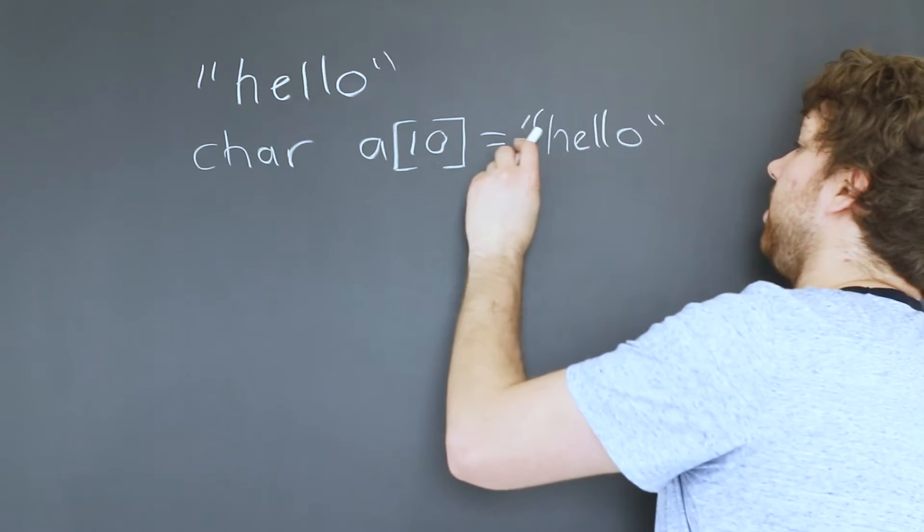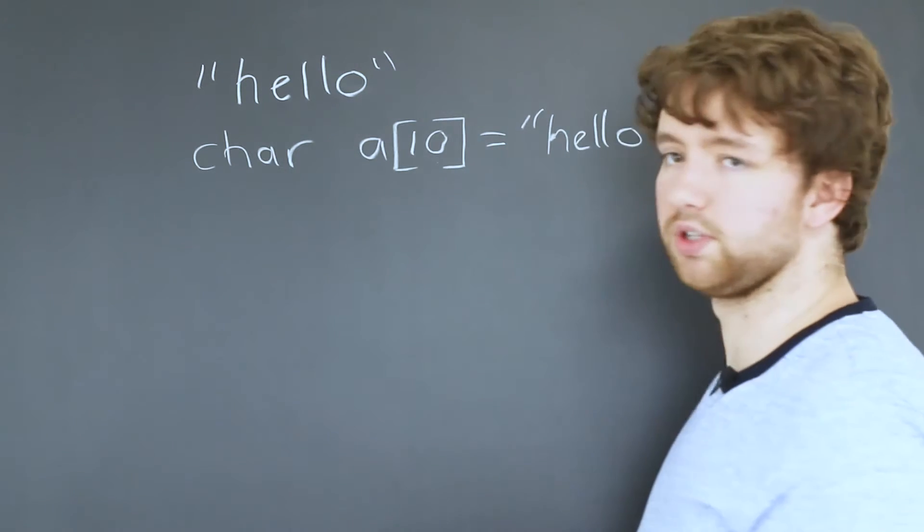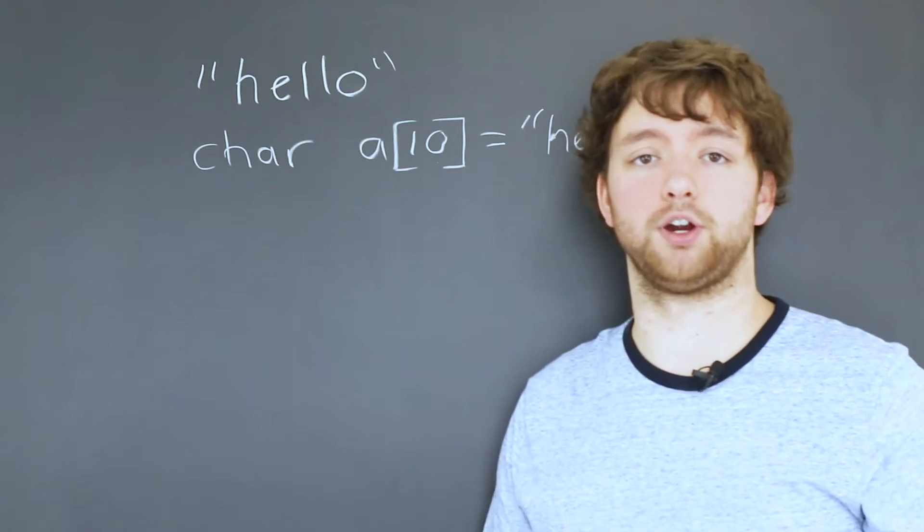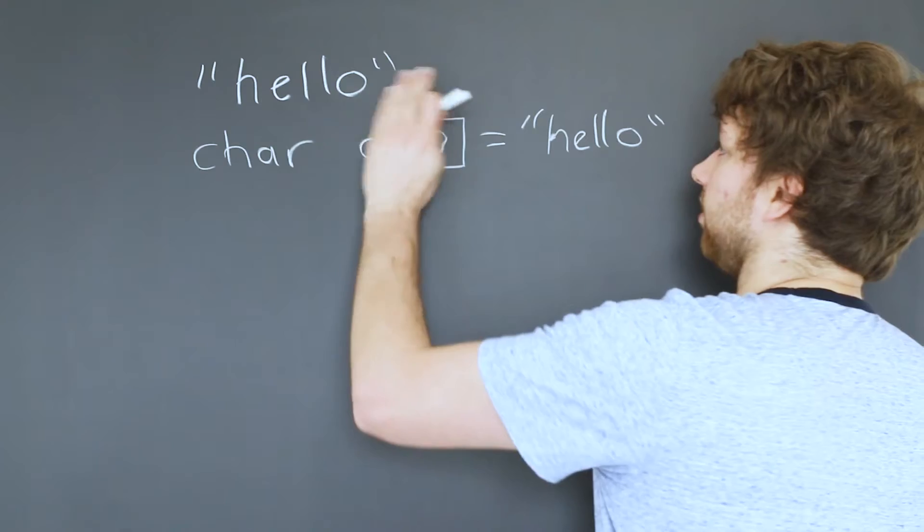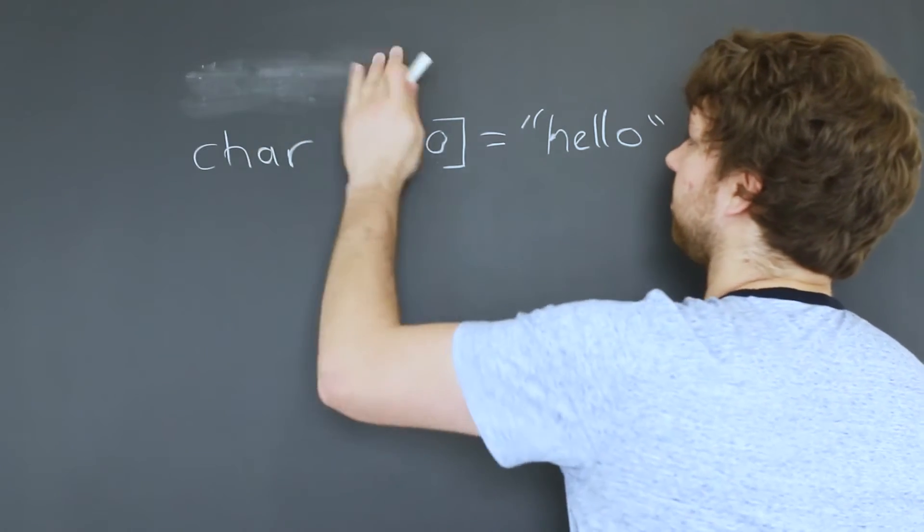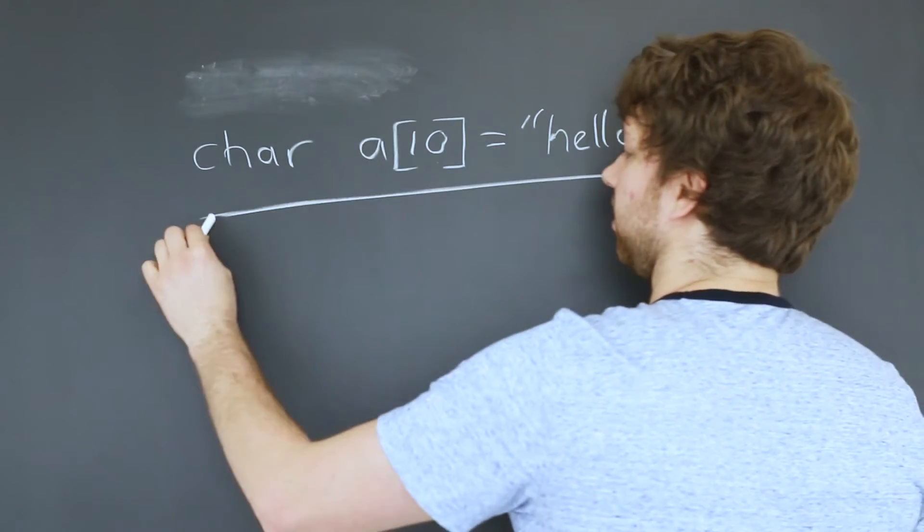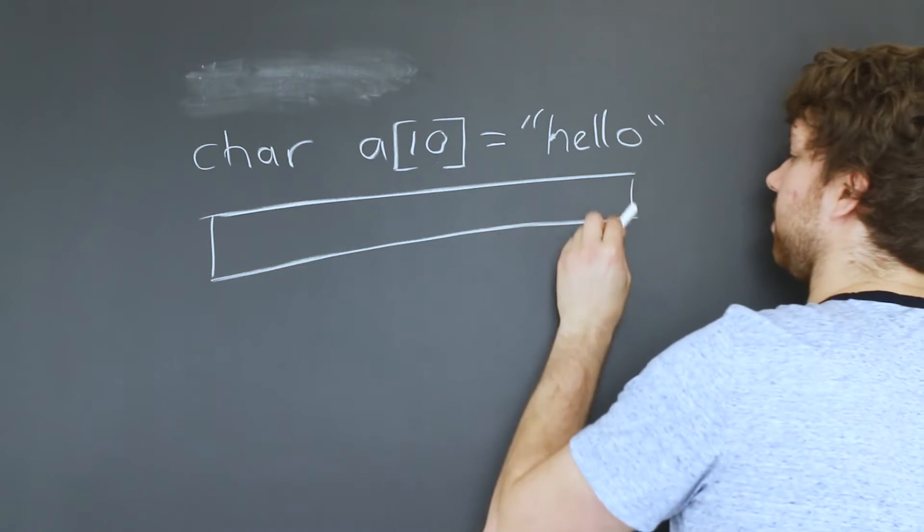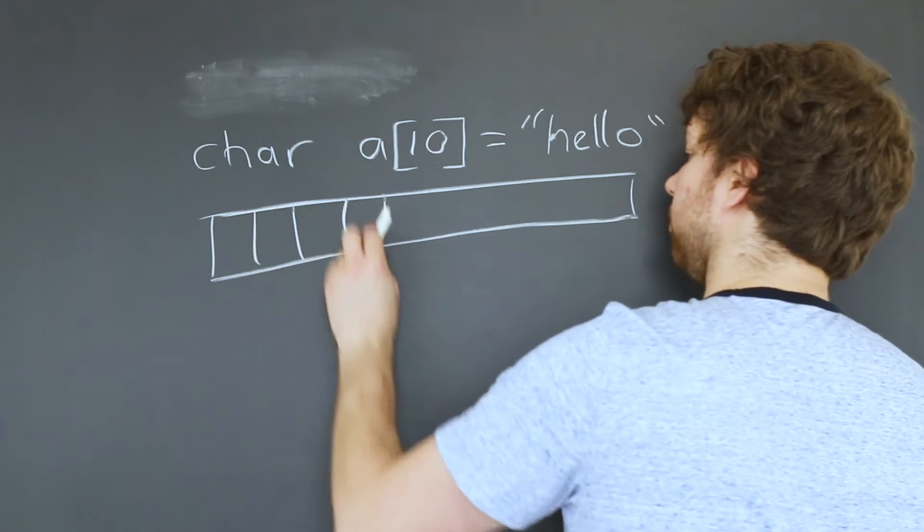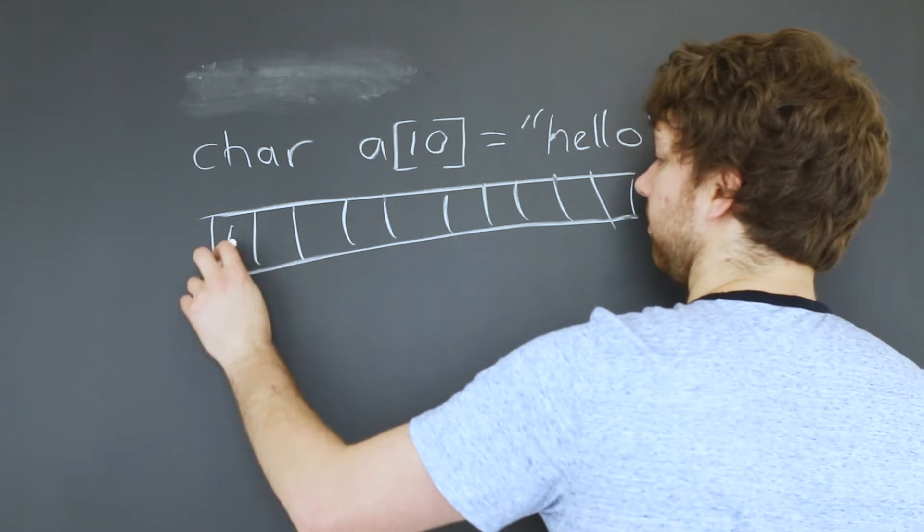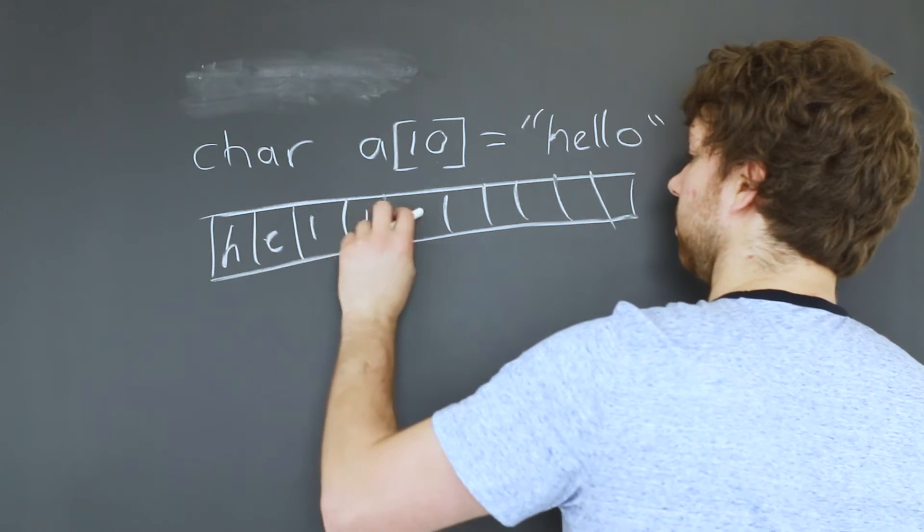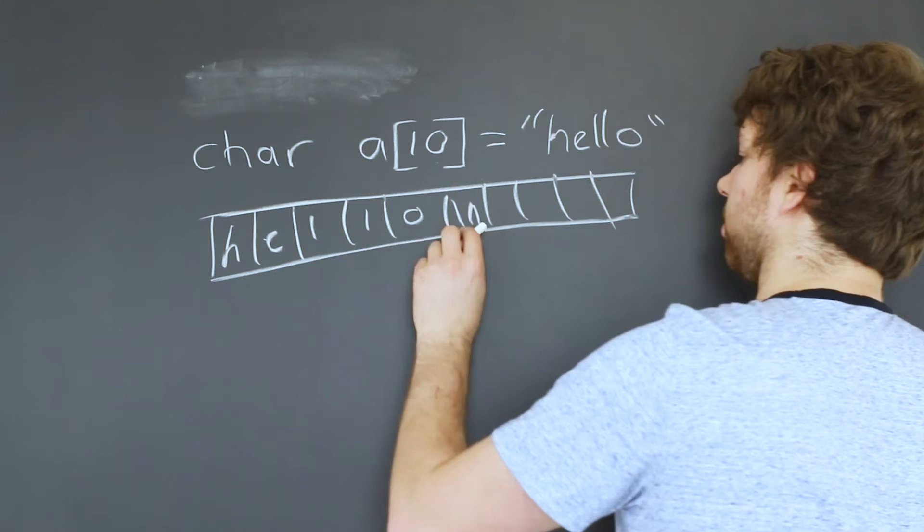And then you can assign it that value. So this is basically the easiest way to assign a string to a variable in C programming. So what this is going to do, and let's ignore this up here for now. We don't need that no more. This is going to make an array and it's going to look like this. We're going to have h-e-l-l-o backslash zero.